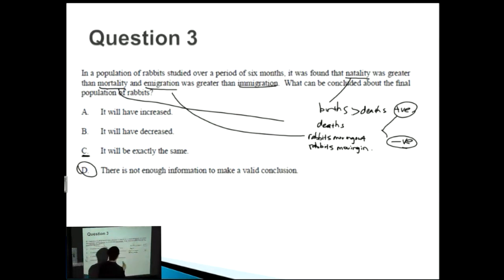The thing is that we don't know the precise number that emigrated, immigrated, died, and were born. So it's important to be critical and to answer D.